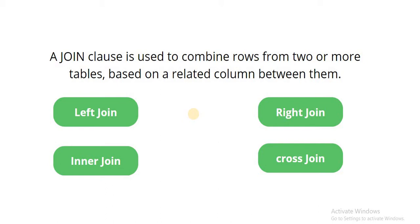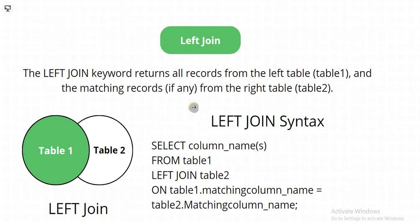Join ke char types hai — left join, right join, inner join, and cross join. First of all we will see what is left join. The left join keyword returns all the records from table one and the matching records, if any, from the right table two. Left join kya karta hai — table one mein se poora data show karta hai aur table two mein se sirf wahi data show karta hai jitna match ho raha hai table one se.